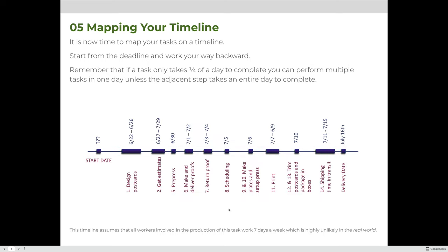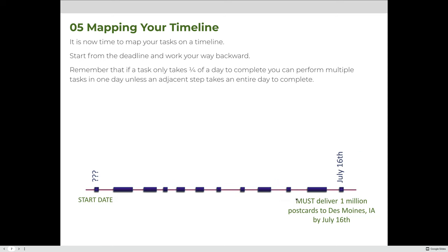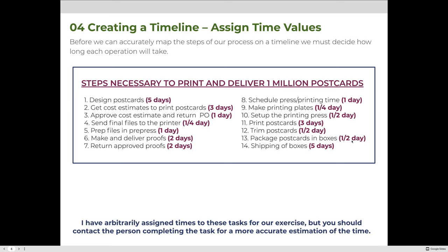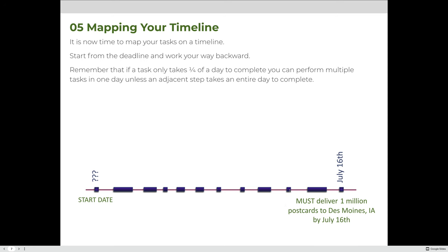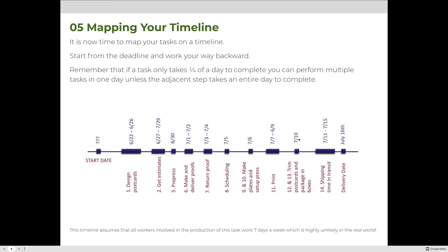Taking all 14 steps and working backwards: July 16th is the delivery date, so five days of shipping covers July 11th through 15th. Steps 12 and 13 each take half a day, so they can both be done on the 10th. Printing takes three days — July 7th, 8th, and 9th. Steps 9 and 10 are a quarter day and half day respectively; even though they don't fill a full day, July 6th will be dedicated to them with buffer room.